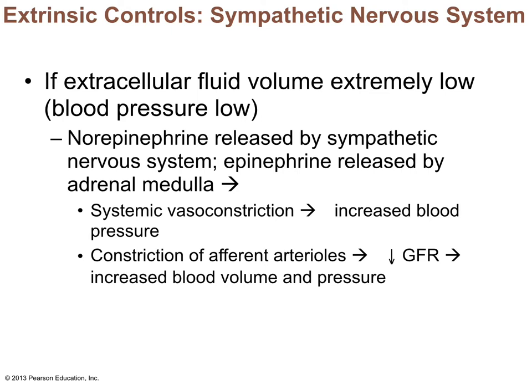For extrinsic control: if blood volume is very low, blood pressure drops and the sympathetic nervous system activates, releasing epinephrine. This causes systemic vasoconstriction, raising blood pressure. At the afferent arteriole, increased pressure triggers constriction to decrease GFR. Decreasing GFR means less fluid is lost in urine, so blood volume increases and blood pressure rises. This is a protective mechanism — when we start with low blood volume, we reduce filtration to conserve fluid.